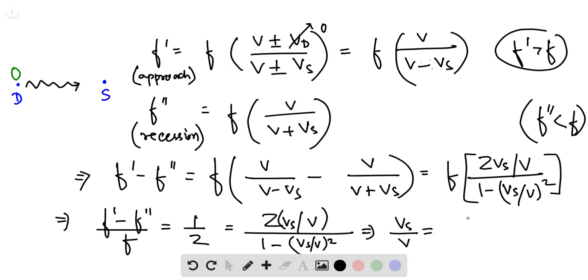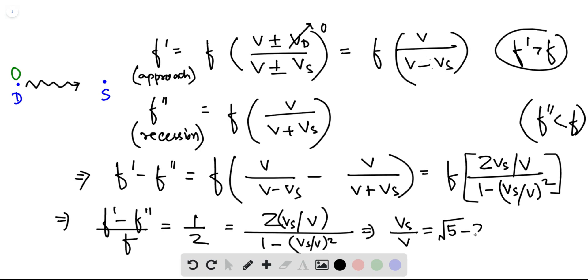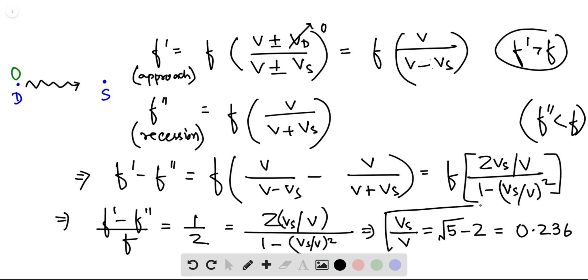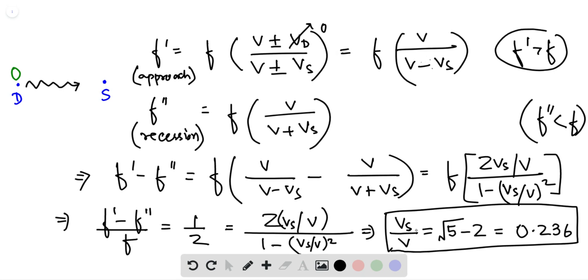V_s over V will come out to be square root of 2 minus square root of 5 minus 2, and that is equal to 0.236. So that is the ratio V_s over V.